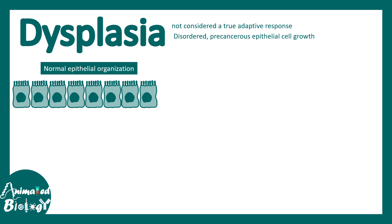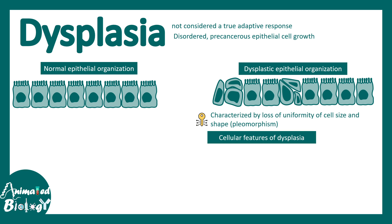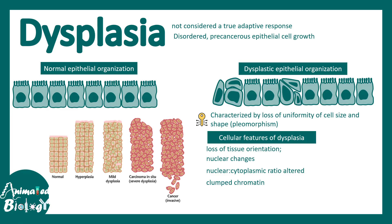This is how a normal epithelial organization looks, and this is how a dysplastic epithelial organization looks. We must remember these key features of dysplasia: loss of tissue orientation, loss of apico-basal polarity, nuclear changes, an altered nuclear-to-cytoplasmic ratio, and chromatin that becomes clumped.